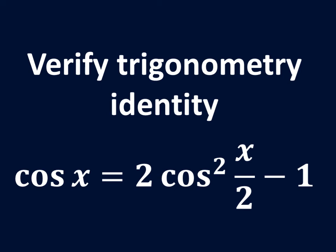In this video, we will learn to verify the trigonometry identity: cosine of x is equal to 2 times the square of cosine of half of x minus 1.